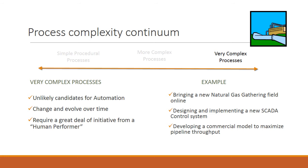On the far right side of the continuum, we have the very complex processes. These are unlikely candidates for automation. They change and evolve over time and they tend to require a great deal of initiative from a human performer. Examples of these type of processes may include bringing in a new gathering field where drilling is underway and communications to hundreds of wells require new construction. The complexity of these processes are a far cry from the simple monitoring of pipeline pressures mentioned earlier.